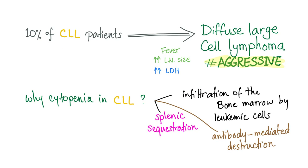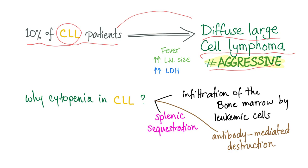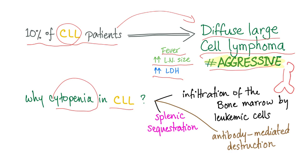Additional notes: 10% of CLL patients will transform into diffuse large B-cell lymphoma, which is very aggressive. When patients transform — known as Richter transformation — they start showing fever, increased lymph node size, and increased LDH in the blood.